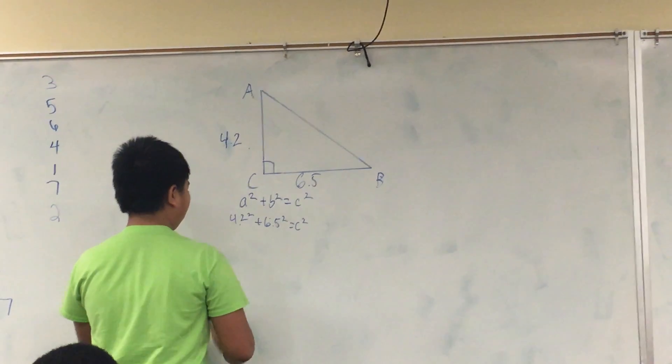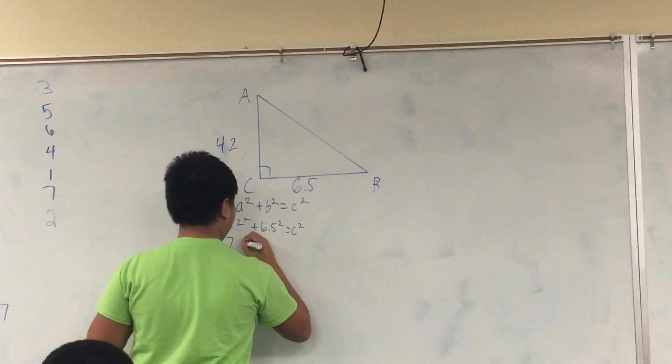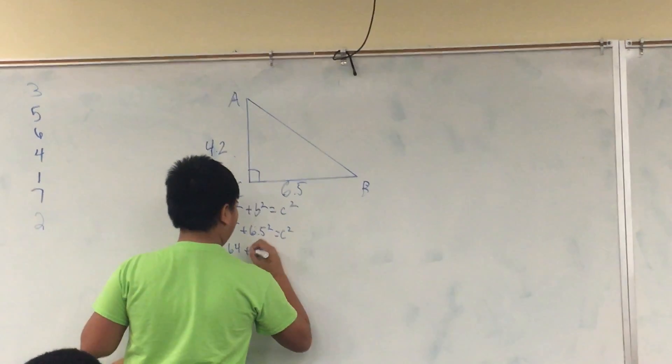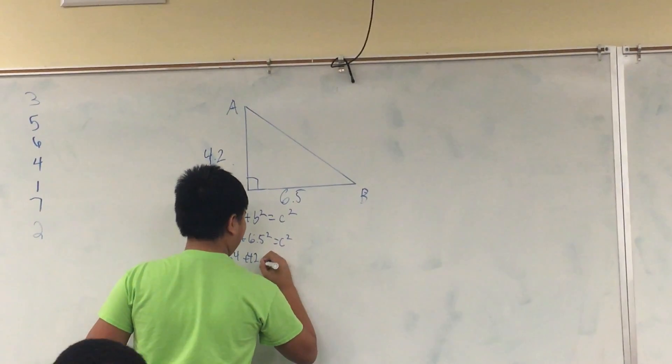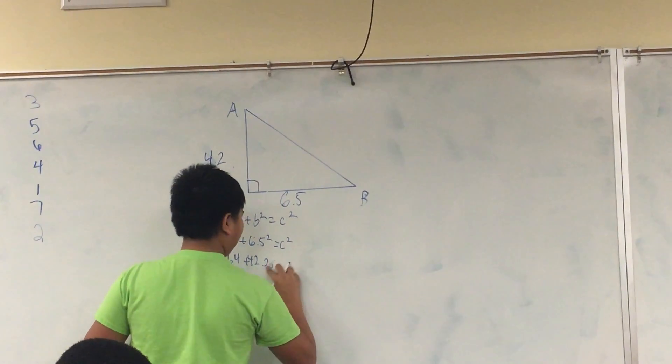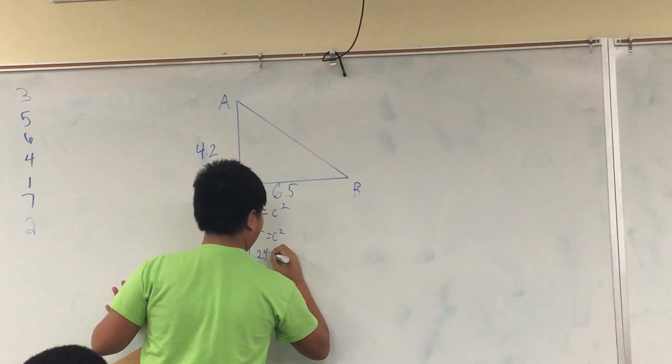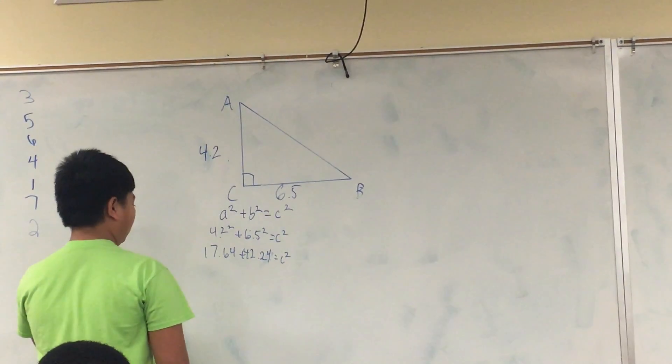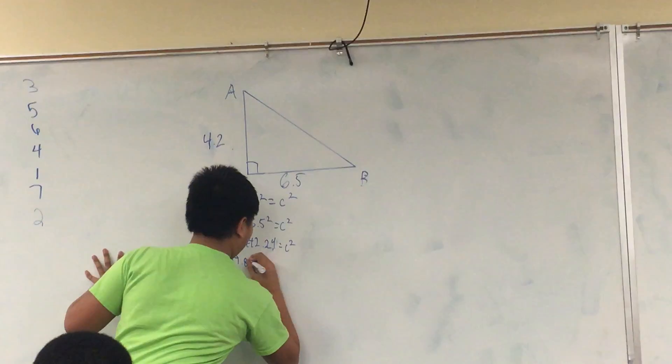Combine like terms. 17.64 plus 42.25 equals C squared, which equals 59.89 equals C squared.